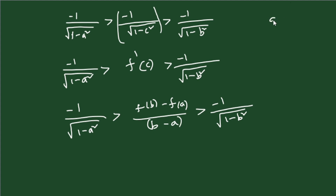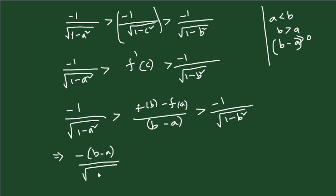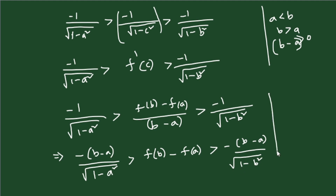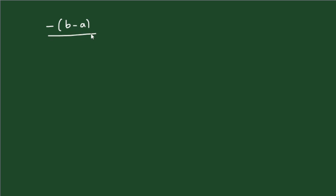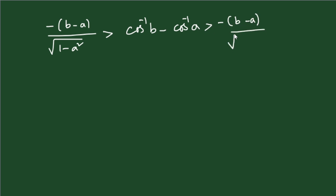Since a < b, we have b − a > 0, so multiplying the entire inequality by (b − a) does not change the inequality direction: −(b − a)/√(1 − a²) > f(b) − f(a) > −(b − a)/√(1 − b²). Since f(x) = cos⁻¹(x), this gives: −(b − a)/√(1 − a²) > cos⁻¹(b) − cos⁻¹(a) > −(b − a)/√(1 − b²).